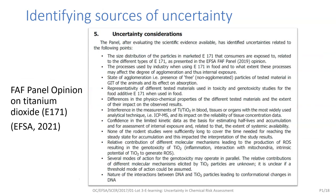Finally, here is an example from the FAF panel's opinion on titanium dioxide, which summarises the uncertainties in a bullet list. At minimum, identified sources of uncertainty should be described in the text. However, summarising them in a table or list like this is recommended for transparency. It's also very helpful for the experts when they assess overall uncertainty — another key step of uncertainty analysis which we will focus on in the next presentation.